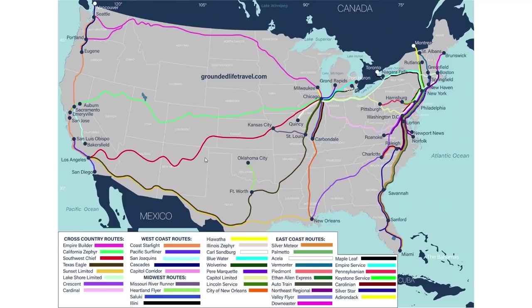The state-level maps are especially useful — for a large state like Texas, you can see exactly which cities the train passes through and where the stations are. Make sure you're using all the tools on groundedlifetravel.com, because we're trying to break down the hurdles we encountered when planning our own trips and make it easier for you to plan across the country.